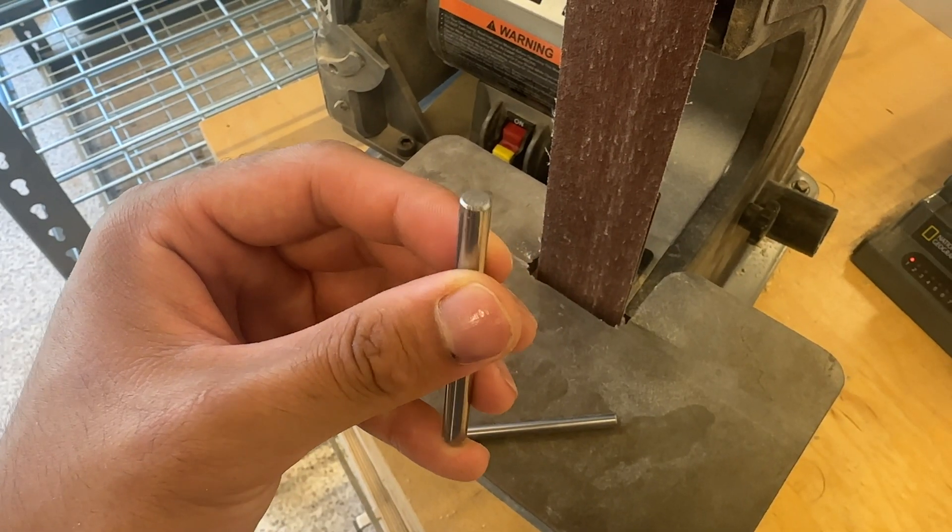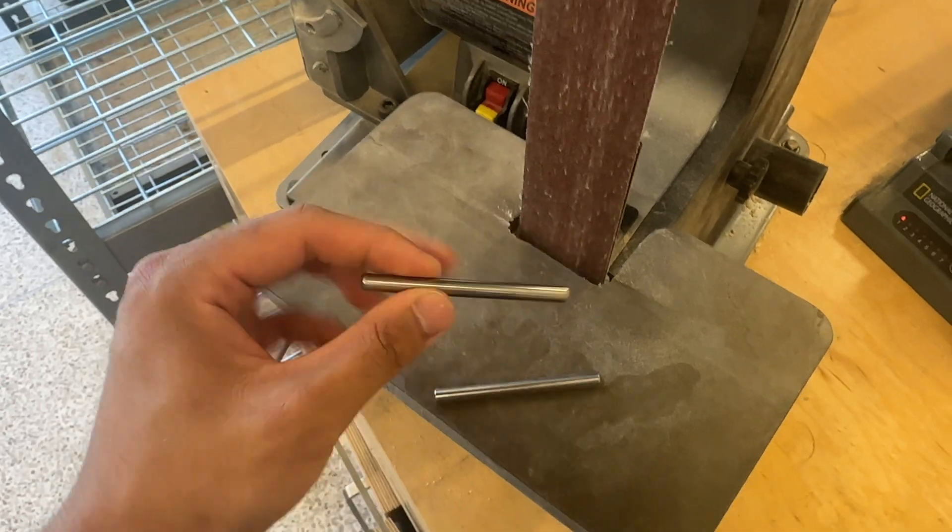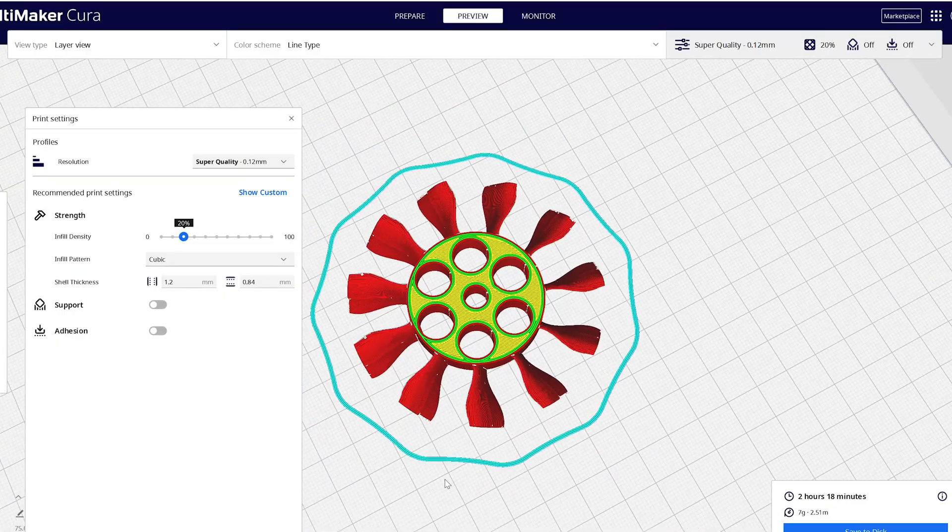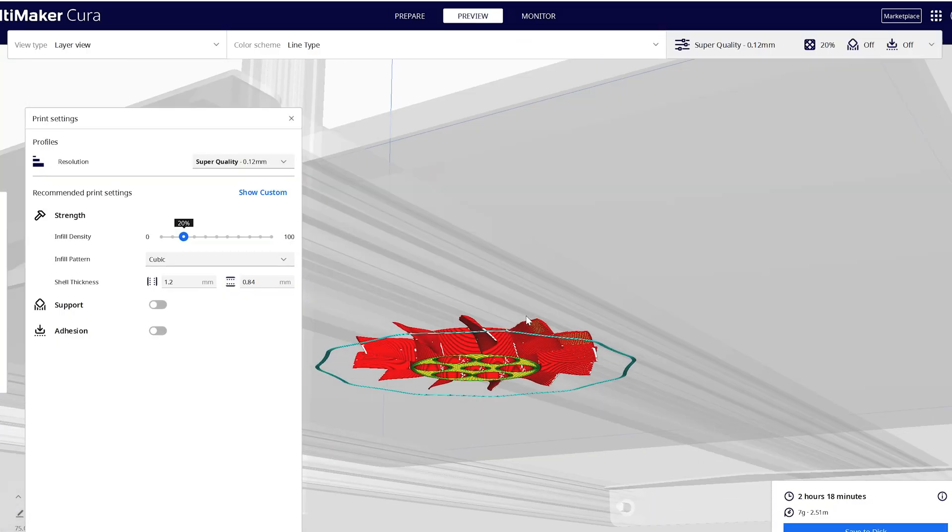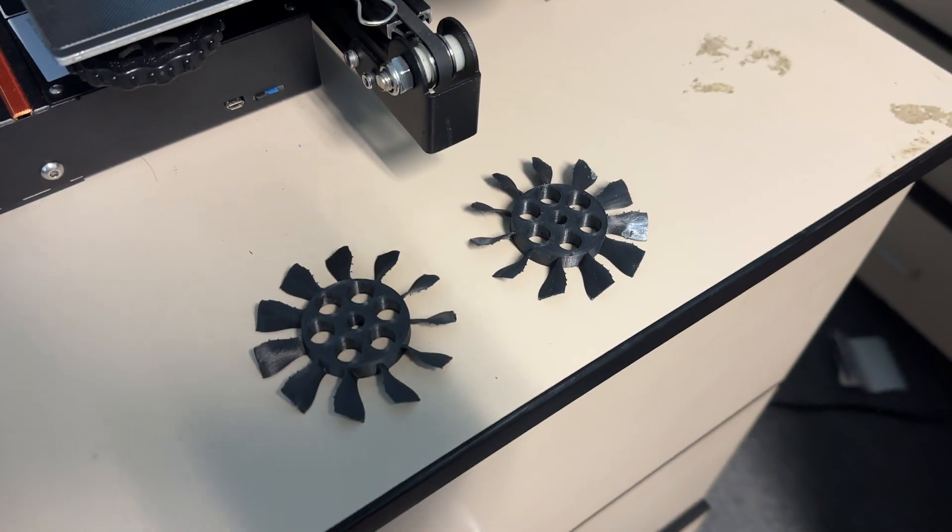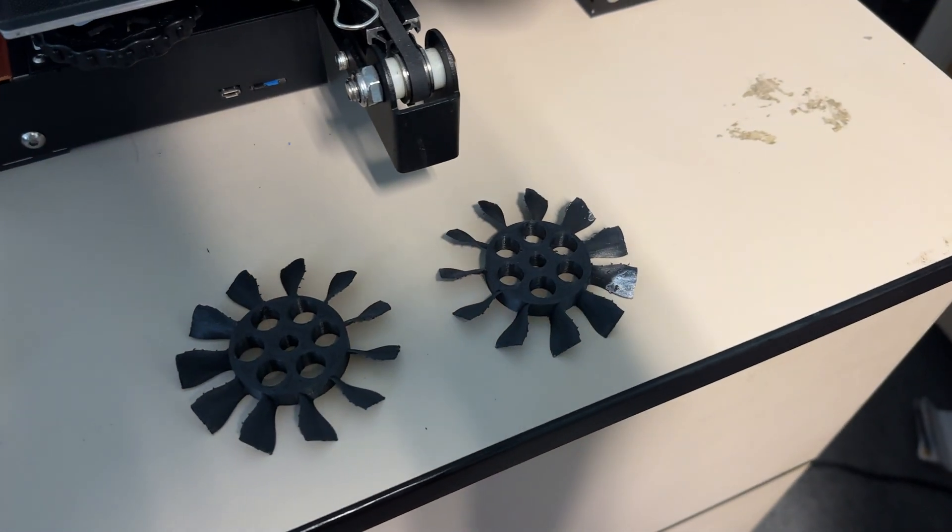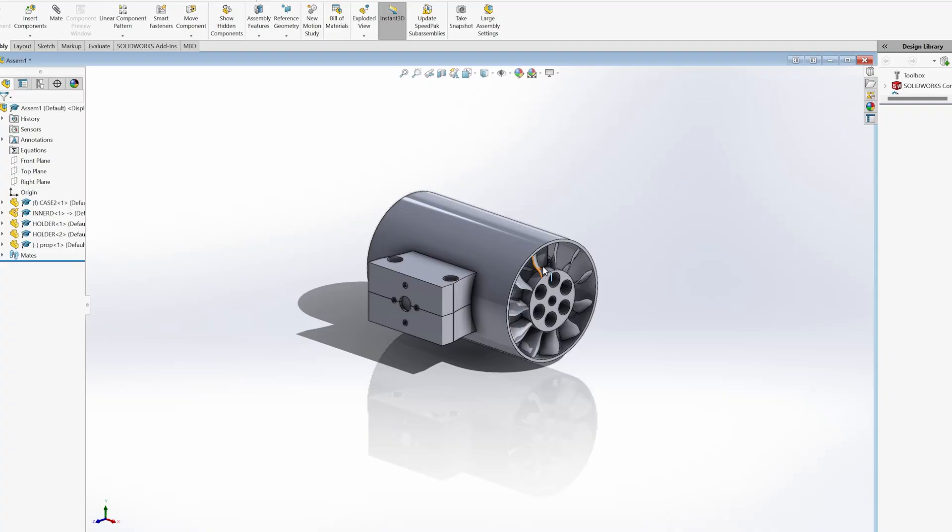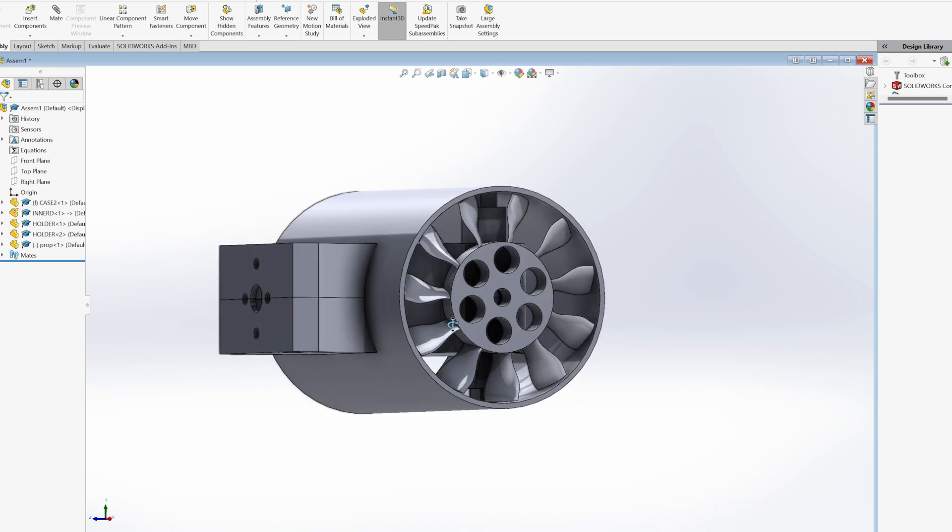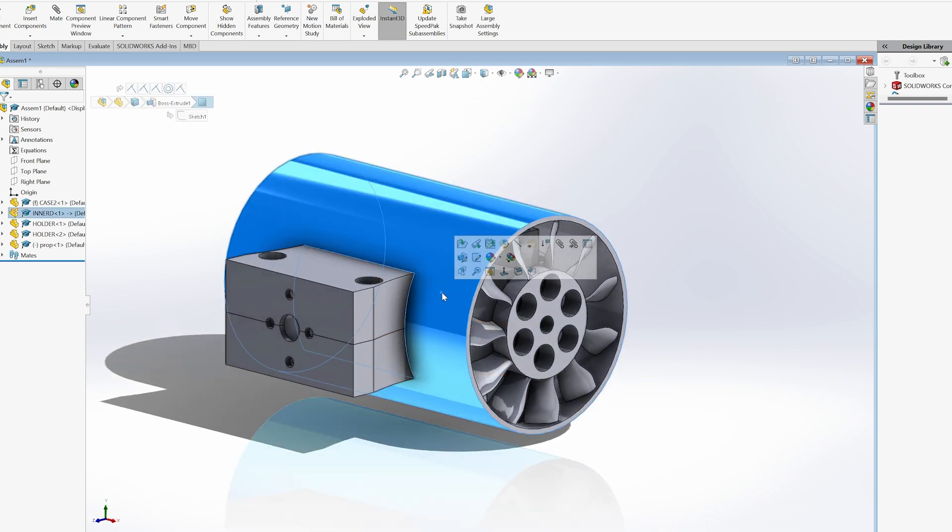I then printed out the exact same fans I used in my previous EDF design using more or less the same method. I don't have my printers as dialed in for this as I had before, but they came out fine for this purpose. I designed the duct to wrap around the gearbox using a super helpful function called cavity in SOLIDWORKS. I had to print it all in four parts. This was a pain to assemble.